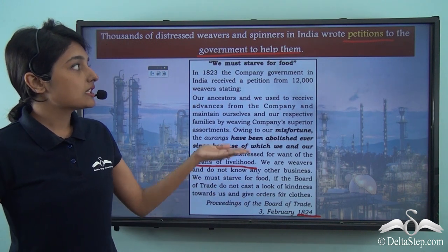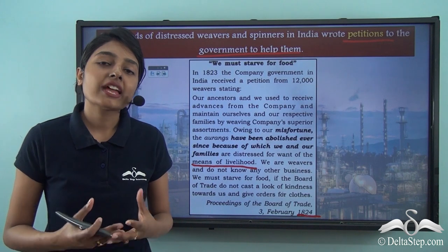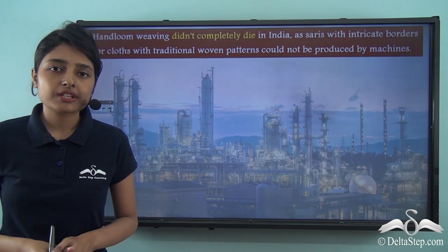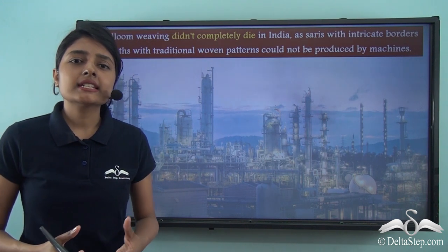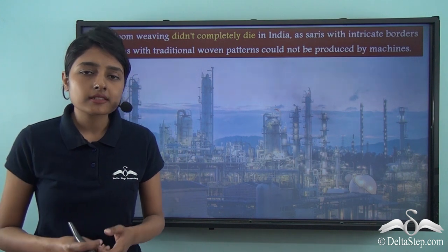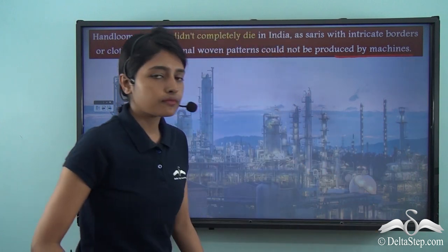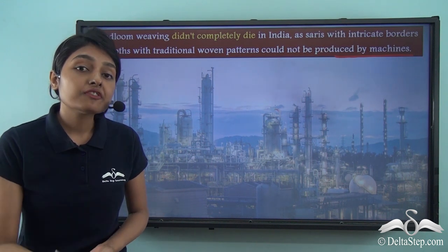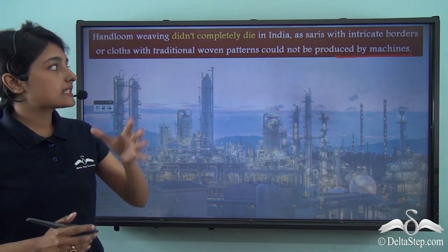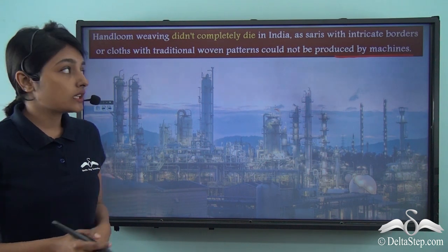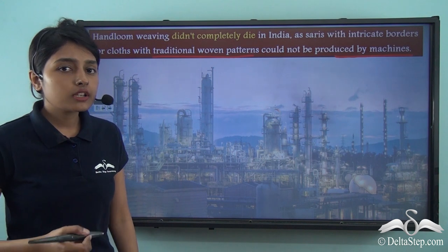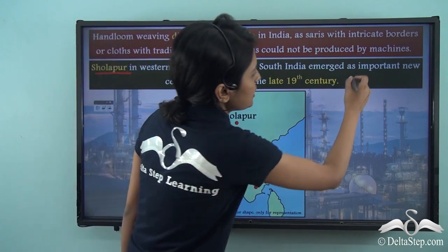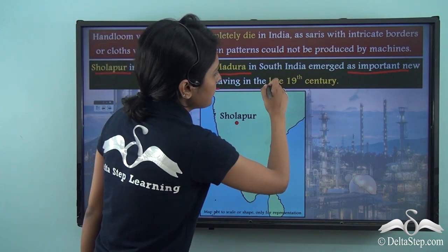They found it very difficult to earn their livelihood, which is why they started petitioning to the government for help and assistance. But this is not to mean that Indian handlooms completely faded out of existence, because various kinds of Indian textiles boasted of very rich and intricate patterns and designs which could not be produced by machines. Which machine can produce such intricate sarees and dupattas and churnis which were produced by the weavers and spinners by hand? Which is why Indian handlooms did not completely die. For this reason, Sholapur in western India and Madurai in south India emerged as important new centres of weaving in the late 19th century.